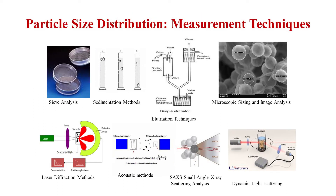Let us see how particle size distribution is measured. In the conventional way, there are several techniques like sieve analysis, sedimentation method, and various microscopic imaging methods. For sieve analysis, we need at least 100 to 200 grams of material and different sets of sieve stacks. When the sieve shaker vibrates the sieves, different amounts of particles remain on each sieve, and by taking the weight of particles on each sieve, we know the particle size range distribution in the total fed sample.